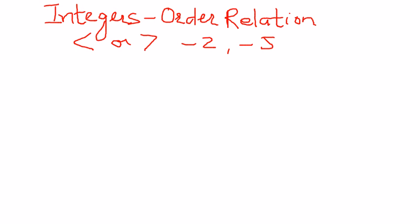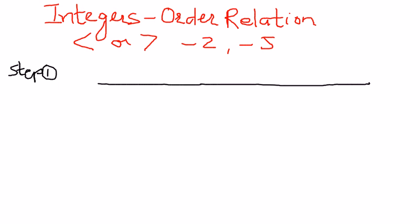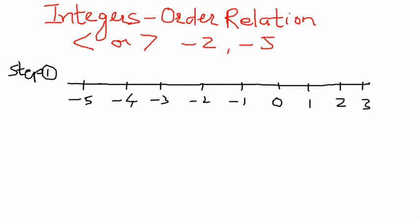The way we want to solve this example is as follows. Step number 1: we're going to draw the number line. We'll draw the number line the way we know it and put some numbers on it. This is the origin. We'll put some positive numbers to the right of 0: 1, 2, 3. And to the left of 0, we'll put some negative numbers: negative 1, negative 2, negative 3, negative 4, negative 5, and so on.